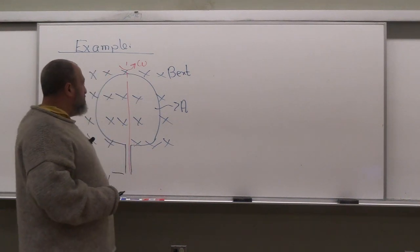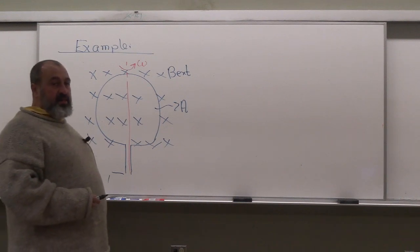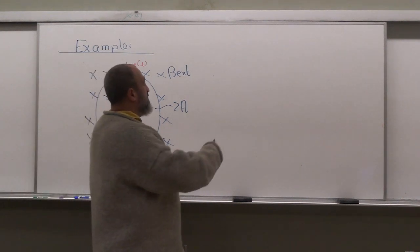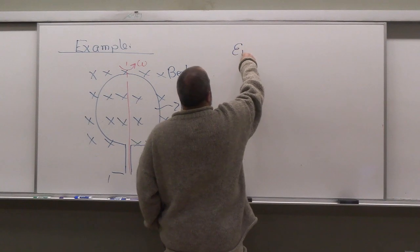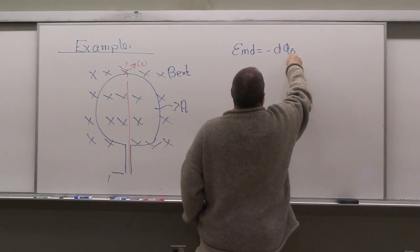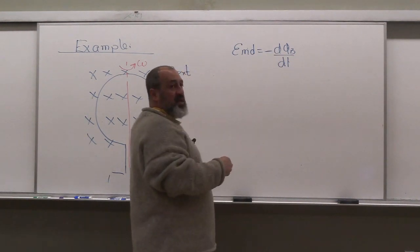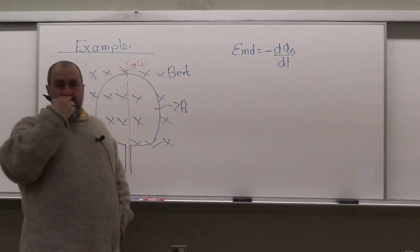Okay, so we're spinning this loop at angular speed omega in the presence of an external magnetic field. And we'd like to see what epsilon induced will be. So epsilon induced is negative d phi magnetic by dt. Signs don't matter much in this case. We're just looking for values.